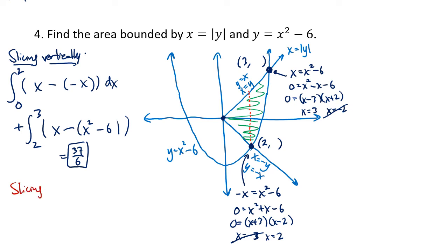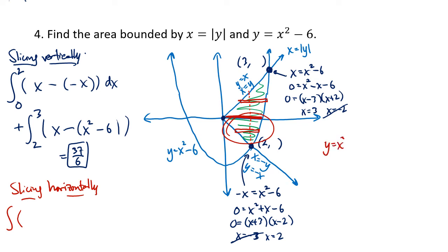For slicing horizontally, we again need two separate integrals because there's a dividing line. Below that line, the rectangle has the parabola on the right and the bottom half of the absolute value function on the left. Above the line, the rectangle still has the parabola on the right but the top half of the absolute value function on the left. Since the parabola is given as y equals x squared minus 6, we solve for x: adding 6 and taking the square root gives x equals plus or minus the square root of y plus 6. We only need the positive square root.